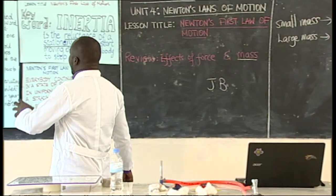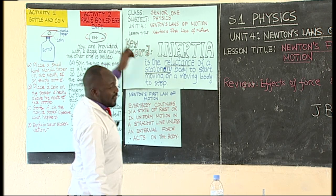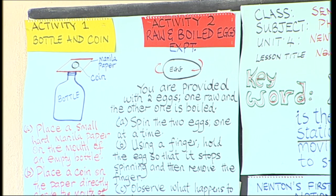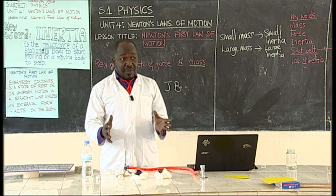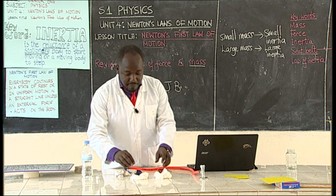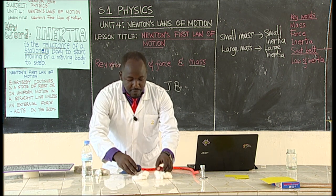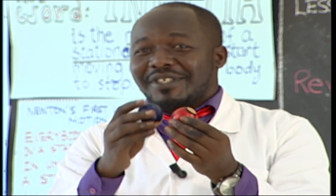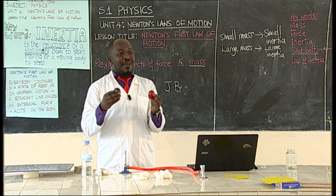Activity 2 is titled Raw and Boiled Eggs — a very interesting experiment. As I said, we can use everyday objects to understand physics concepts simply, and you can do this at home. Right here I have three eggs. This egg is raw, and if it falls it can crack. The other two I have colored with a marker — the red egg and the blue egg — to differentiate them. We'll use these eggs to explain inertia.